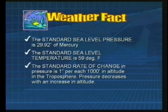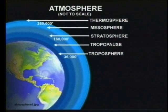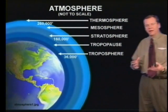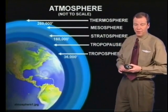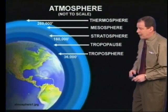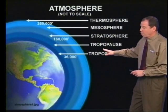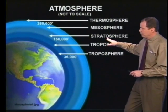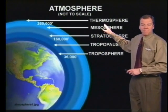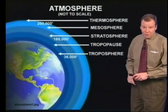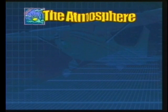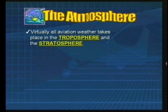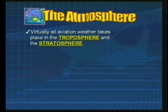Meteorologists look at the atmosphere like you would a layer cake — there are several different layers. From the bottom up, they are: the troposphere, the tropopause (that's the top part of the troposphere), the stratosphere, the mesosphere, and the very top layer, the thermosphere. Virtually all aviation weather takes place in the bottom two layers of the atmosphere — the troposphere and the stratosphere.